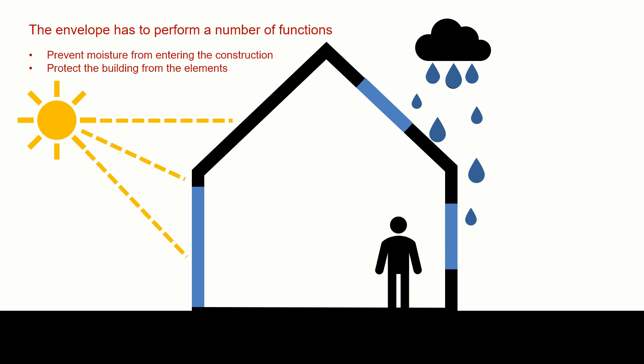Protection from the elements is probably the most obvious thing you would think of when thinking about the envelope — the windows, walls, doors and roof. We want to stop rainwater getting in. We want to protect the occupants from UV light, and we also want to protect the materials of the building from UV light. So the component parts of the envelope have to be designed so that the materials are suitable for protecting us from the elements.